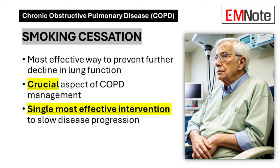Smoking cessation remains the single most effective intervention in slowing the progression of COPD. It significantly impacts the natural history of the disease, reducing the rate of lung function decline and improving overall prognosis. Healthcare providers should consistently emphasize the importance of quitting smoking and provide support through counseling, pharmacotherapy, and referral to specialized cessation programs.